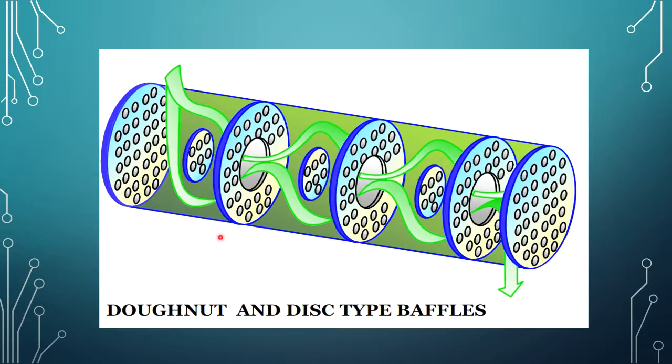Next is the disc and doughnut type baffle, and this image shows how it looks.